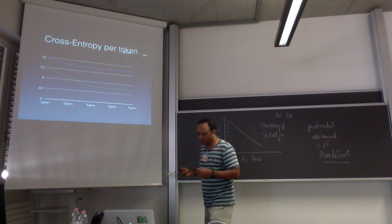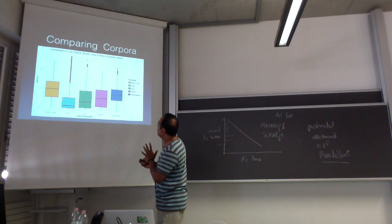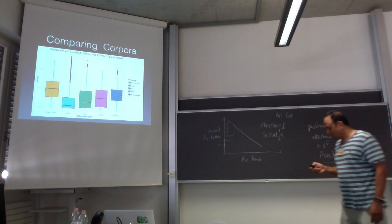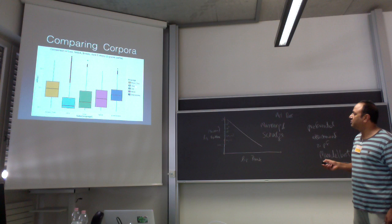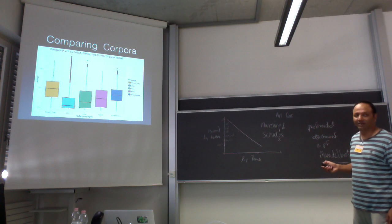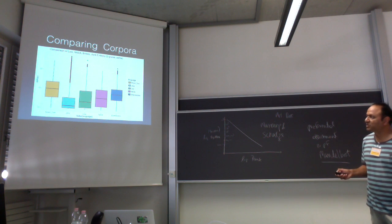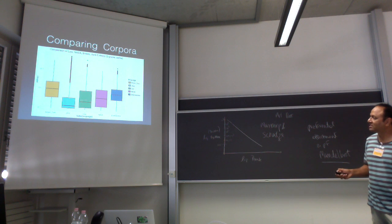Here's another interesting plot comparing the law corpus, the NASA corpus, Shakespeare, Brown, and Java. The y-axis is cross-entropy — take a good model and measure the cross-entropy. Java is the most predictable, with the lowest entropy. Law is next, then NASA, and then Shakespeare and Brown are out there with the highest entropy.